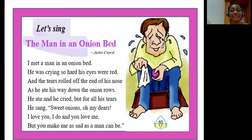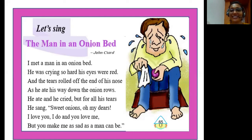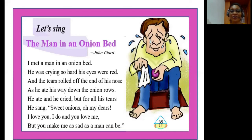This poem, 'The Man in an Onion Bed,' is about a man sitting in an onion bed eating onions. Onions make us cry, so even though the man loves onions, they make him cry — he says 'dear onions, I love you, but you sure make me sad.' With this, we have completed the textual exercises of the lesson 'Why.' Thank you and have a wonderful day!